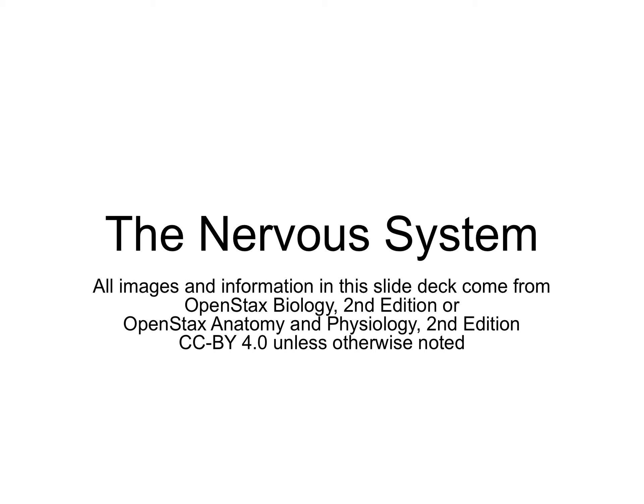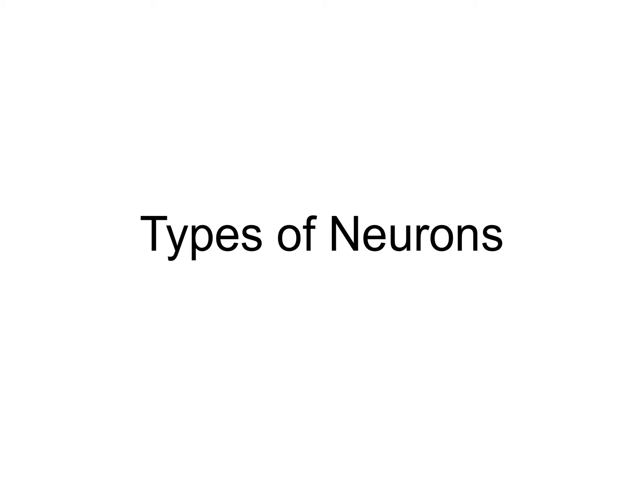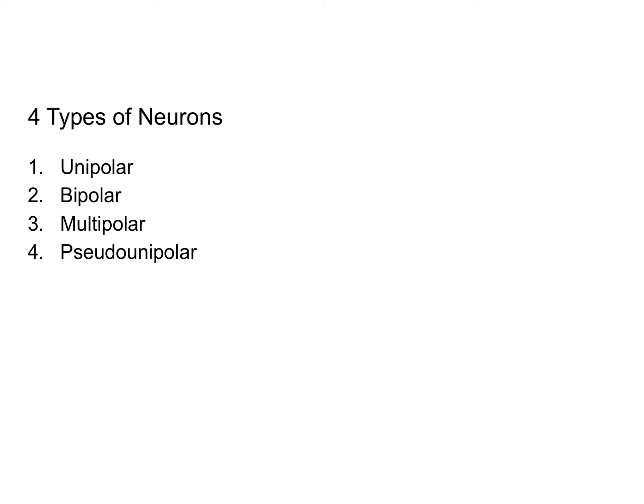In this video, we're going to address some of the course competencies that were not covered in the other videos. First, we're going to talk about the four different types of neurons. There are unipolar neurons, bipolar neurons, multipolar neurons, and pseudounipolar neurons, and we're going to talk about each type in more detail on the following slides.